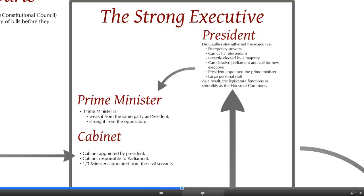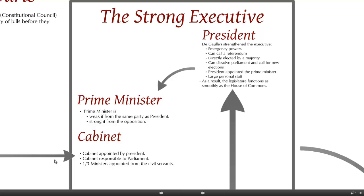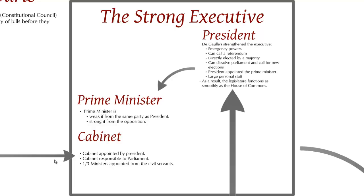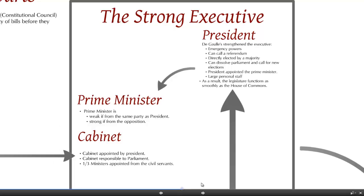So all of this is why we call the French system a semi-presidential system: it does have the direct election of the president, the president stays in office even if the cabinet falls, but there are these constraints on parliament that give it a distinct Westminster quality.